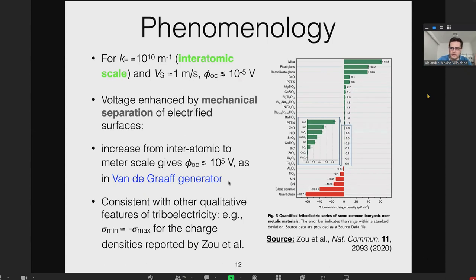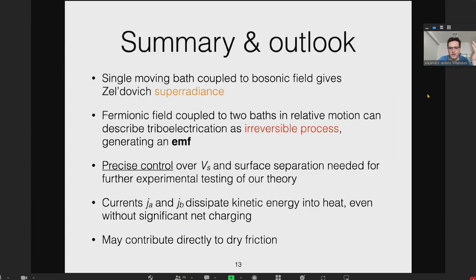Just let me close. The point is we're trying to describe triboelectricity as an irreversible process. There are some predictions that this model can make even without any detailed modeling of surface electronic states. A more precise comparison to experiment would require more precise control over sliding and surface separation, which is a little bit difficult to get in experiments because of stick-slip and things like that. Thank you very much. I'd be happy to take questions.